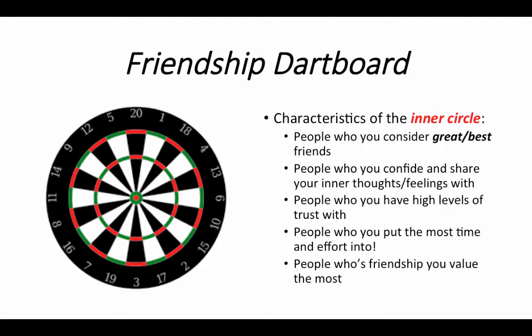Characteristics of the inner circle: these are people who you consider great or your best friends. Newsflash — especially to some of our female students — you can have more than one best friend. I know 'best' is a lot of times translated as singular but you can have multiple best friends. I probably have a half dozen people I consider my best friends. Friendship isn't a prioritizing type thing. People who you confide in and share your innermost thoughts and feelings with — these are people in your inner circle.